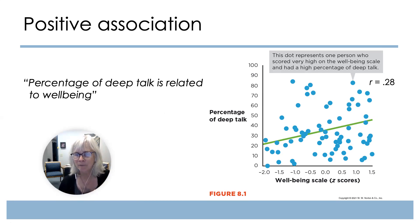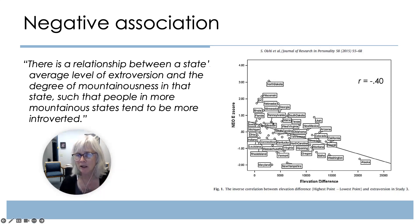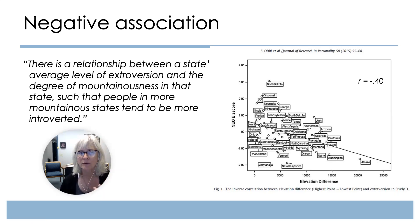That correlation of 0.28 is not all that strong — it's probably significant, but not something you're going to write home to your mom about. For the negative correlation, this is a fairly strong correlation for psychology and behavioral ideas — our correlation of minus 0.4. You can see that the slope goes in the opposite direction. Each data point refers to an entire state's population. There is a relationship between a state's average level of extroversion and the degree of mountainousness in that state, such that people in more mountainous states tend to be more introverted.